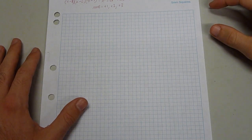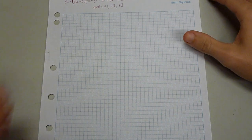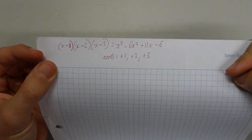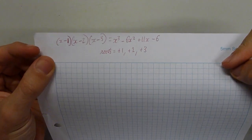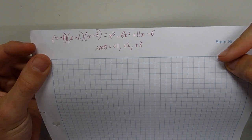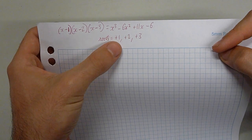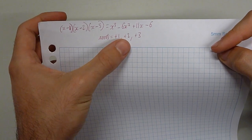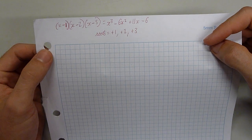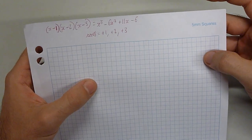Hi, so I got a request to do another question because some people had problems with the technique. The question I've been asked to solve is x cubed minus 6x squared plus 11x minus 6, and the roots of this are of course positive 1, positive 2, and positive 3. Since these are all real roots, we should be able to solve for them with the method.